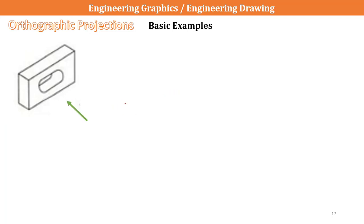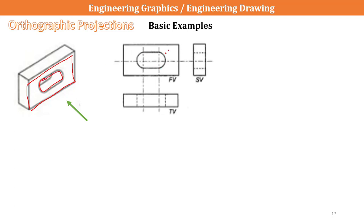Next example: seeing the view from this particular side, I can see the entire edge surface from the front view, as well as the elliptical hole from the front view. Since it's an elliptical hole, we have to represent an axis line. For any hole, we have to represent the axis line — I forgot to mention this in the earlier case as well.